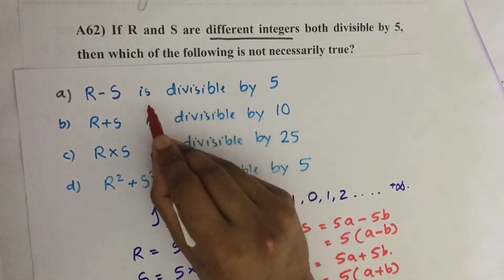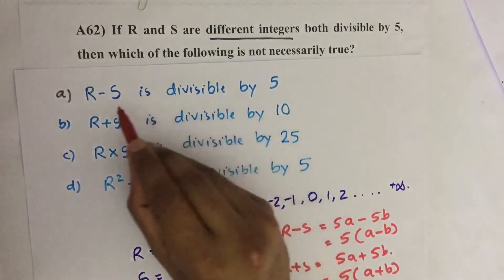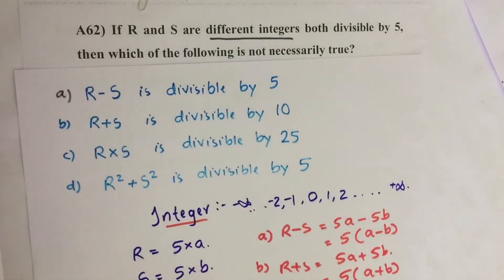First one: R minus S is divisible by 5. R minus S equals 5A minus 5B. I am taking 5 outside, then 5 into A minus B. So this number is always divisible by 5, so the first statement is necessarily true.